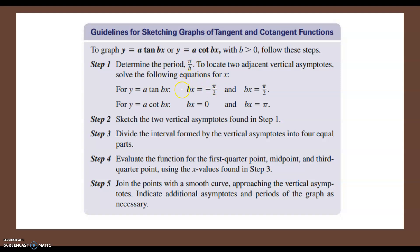Also, you will take bx — the argument inside the tangent or cotangent — and set it equal to -π/2 and π/2 for the tangent function, or equal to 0 and π for the cotangent function. These values are where the asymptotes occur in the original functions, so doing this gives you your new asymptotes. Once you find your asymptotes, you sketch them, take the period, divide it into 4 equal intervals, and make those intervals that spacing.